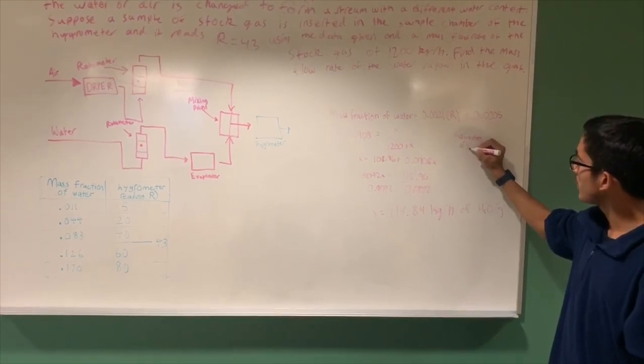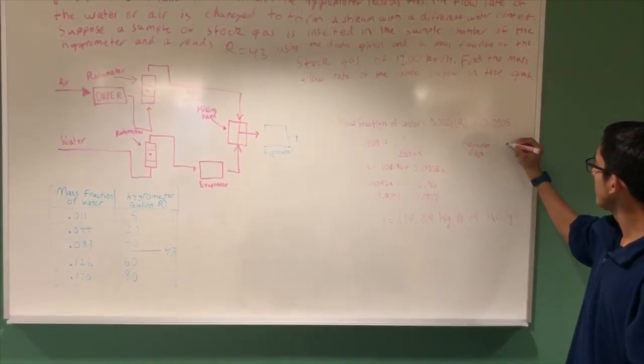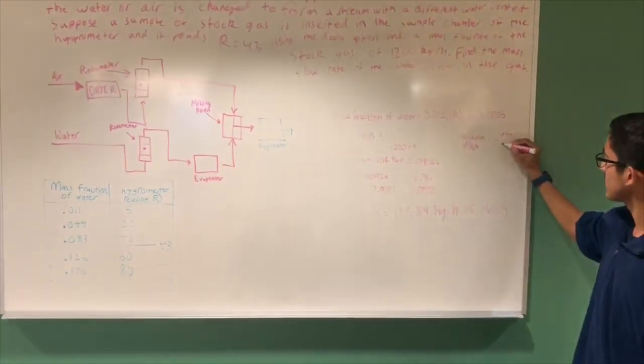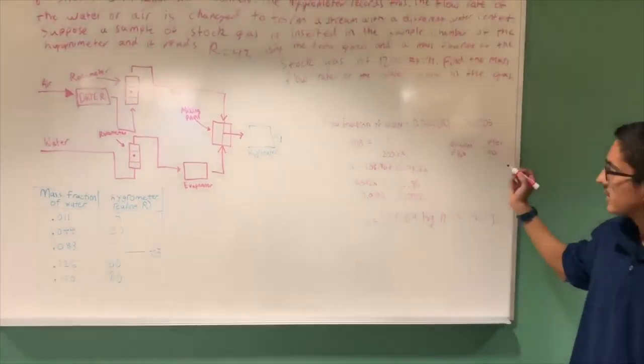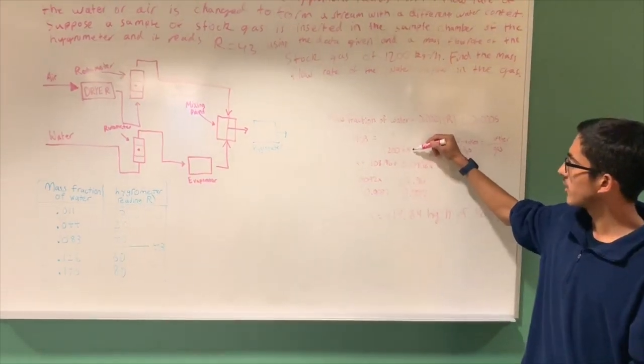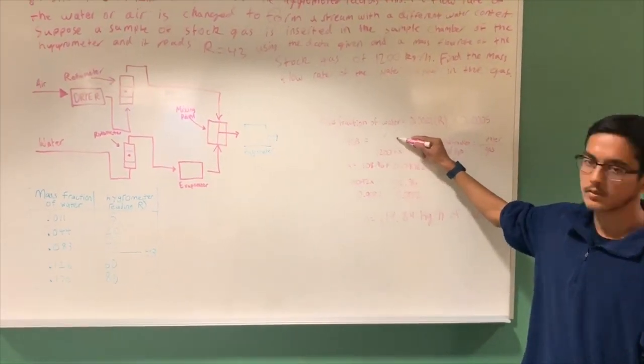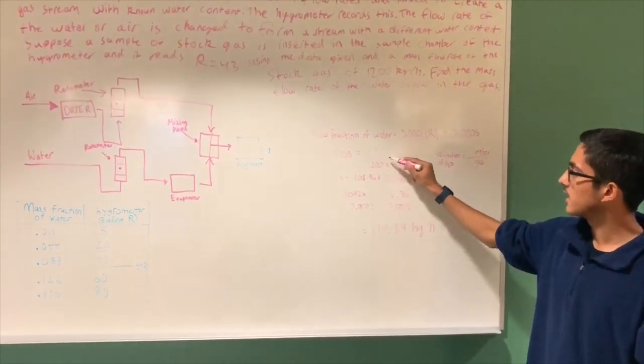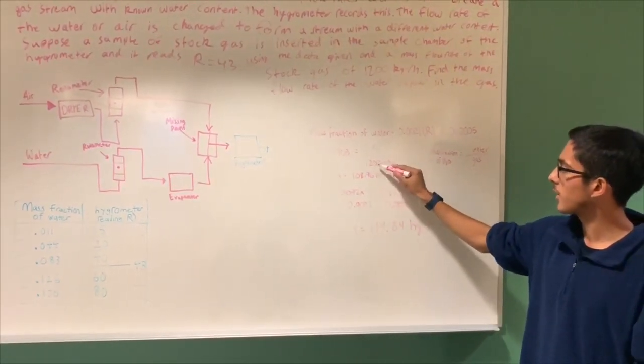Mass fraction of water equals the mass of water over the total mass of the gas. This is why we have x over 1200 plus x, because x is the mass of the water which we do not know, and 1200 plus x is the total mass of the air plus the water.